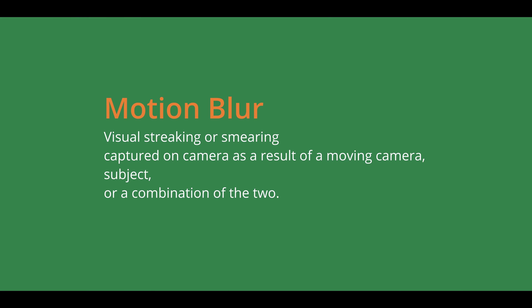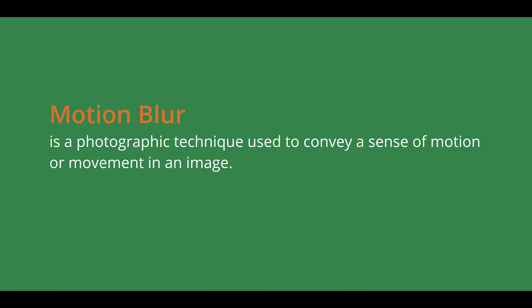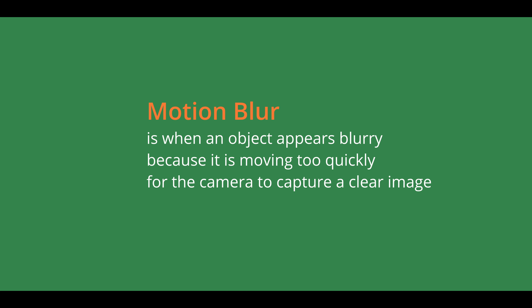Motion blur results when the image being recorded changes during the recording of a single exposure due to rapid movement or long exposure. This is a definition I found on Wikipedia. Another definition is that things appear blurred in a photograph — like this, this, and this. This is motion blur according to the definitions, but I believe it's important to know how to use motion blur as a photographer or as an artist and how to incorporate it in our work.